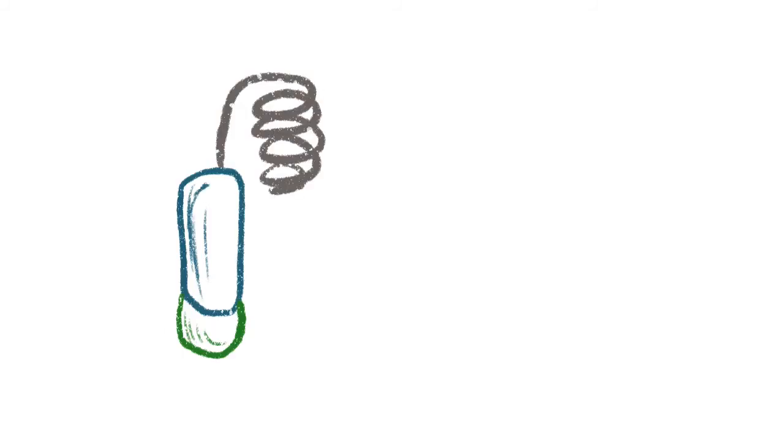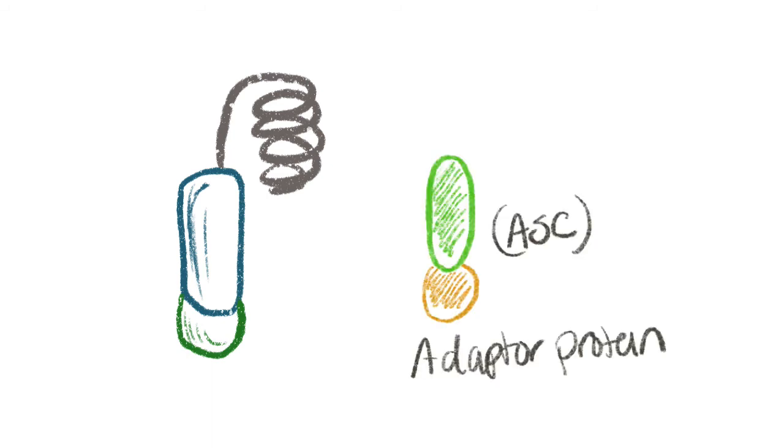So here you have the NLRP3, it's activated. That NOD-like receptor will soon bind to an adapter protein, which is also known as ASC, which is a pyrin and a CARD domain. Together it's known as the adapter protein complex with the pyrin and CARD domain.